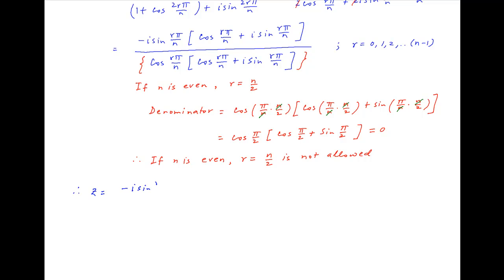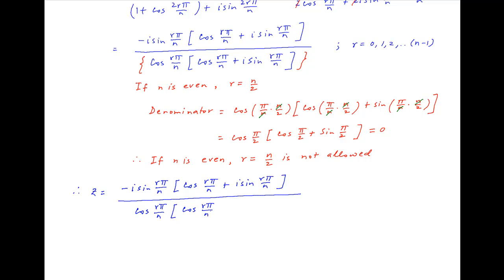Going back to the expression for z, we get z = (−i·sin(rπ/n)·(cos(rπ/n) + i·sin(rπ/n))) / (cos(rπ/n)·(cos(rπ/n) + i·sin(rπ/n))). The factor (cos(rπ/n) + i·sin(rπ/n)) cancels across the numerator and denominator, and therefore z = −i·sin(rπ/n)/cos(rπ/n), which gives z = −i·tan(rπ/n), where r = 0, 1, 2, ..., n−1.